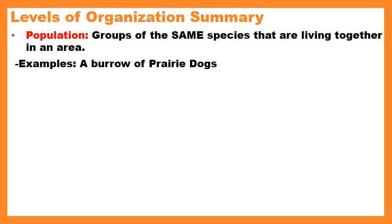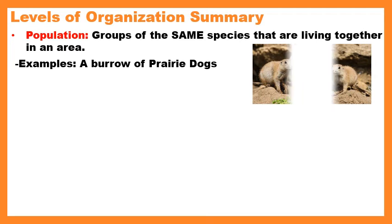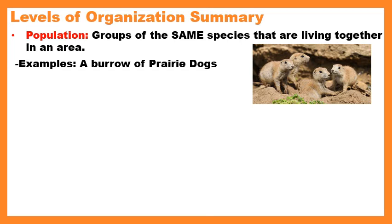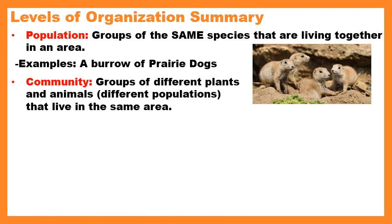A population is a group of the same species living together in an area. For example, a burrow of prairie dogs — they're all within the same species, just describing a group of that species living in the same area. To use a classroom analogy: if I were teaching you summer school, I would consider us a population because we're all humans hanging out in that same classroom.